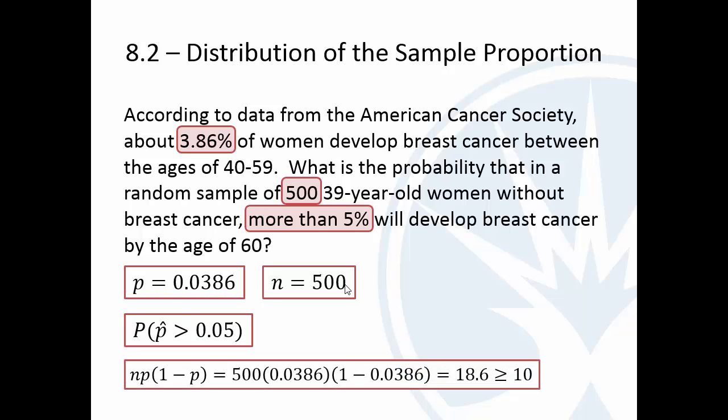Well, let's do our check here. N times P times 1 minus P, and that's 18.6. So that is at least 10. So we can approximate this with the normal distribution. Sample size of 500, I don't know how many 39-year-old women there are. There's 330 million people in the United States. It's probably about 9, 10 million 39-year-old women. So anyway, we're fine. It's not more than 5% of the population. So we are good. We can do the normal approximation.